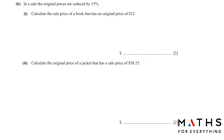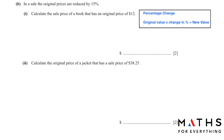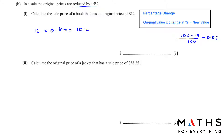In a sale, original prices are reduced by 15%. Calculate the sale price of a book with an original price of $12. We use the formula: original value multiplied by the change in percentage gives the new value. Since it's reduced, we subtract from 100: (100 - 15)/100 = 0.85. Multiplying 12 by 0.85 gives $10.20 as the sale price.